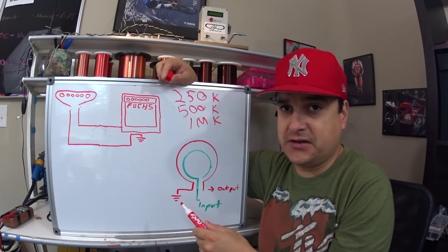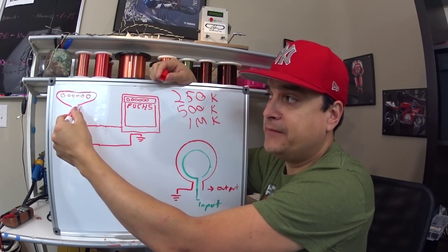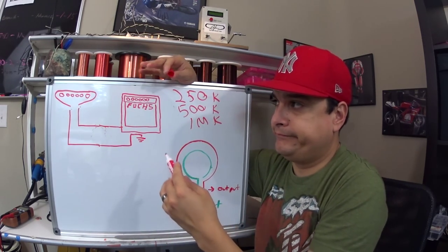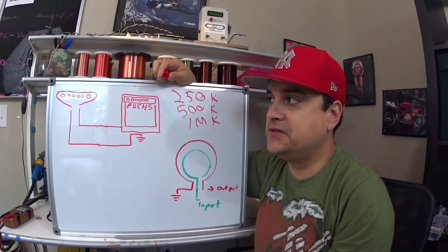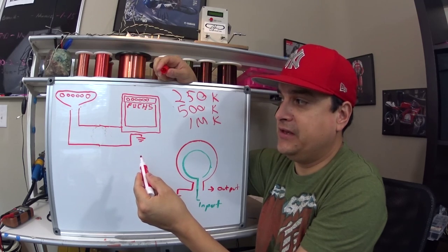So the simpler the circuit, the more accurately the signal over here from the pickup is going to be transferred to the amp. So that is one thing.